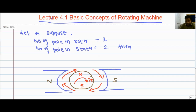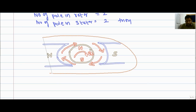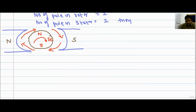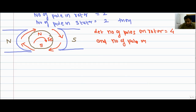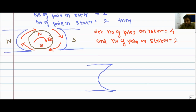Let us move on to another condition. Let the number of poles on the rotor be equal to 4, and the number of poles on the stator be equal to 2. Then we need to examine what torque is generated. Let us draw the stator winding with 2 poles on the stator and 4 poles on the rotor.